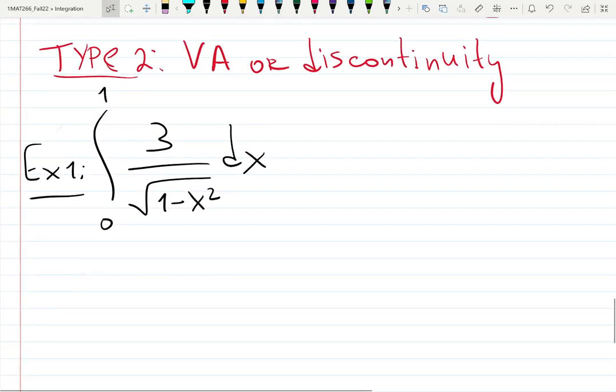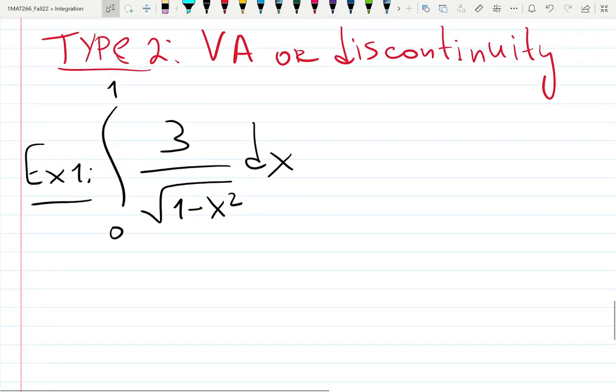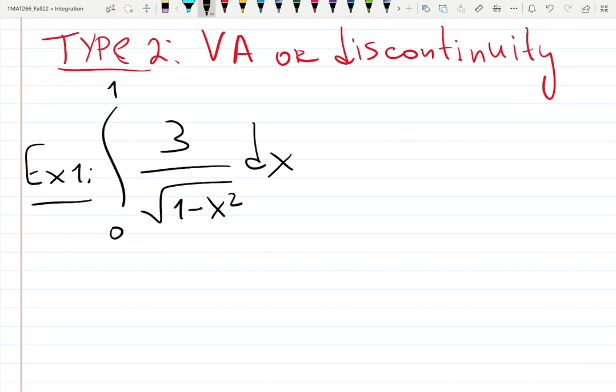So what is wrong with this integral? Why is it not proper? What do you think? Vertical asymptote where? At one. So in European notation, I will show you, we put in a circle the problematic location.